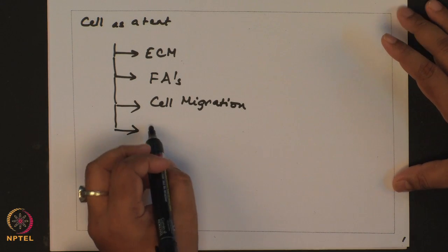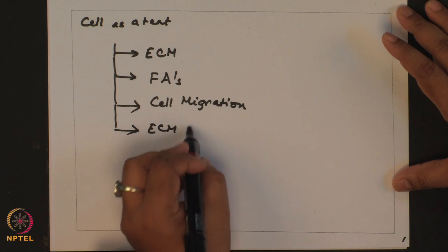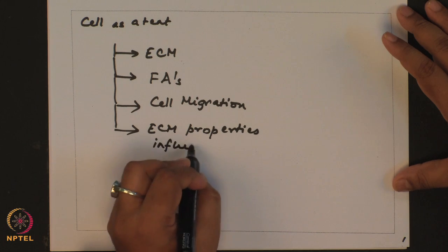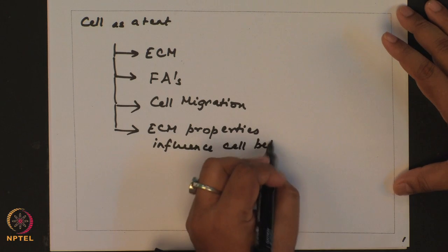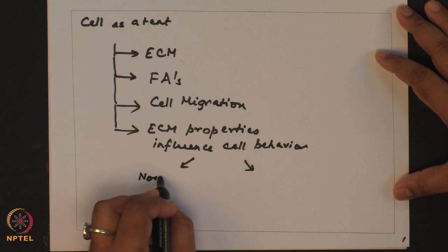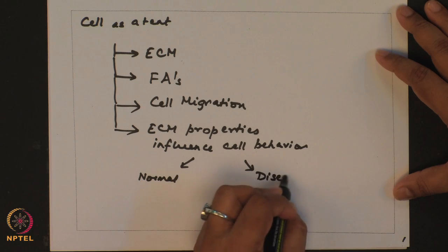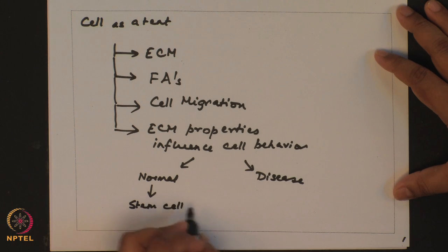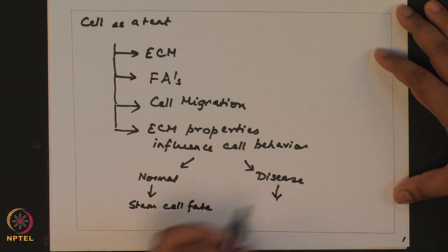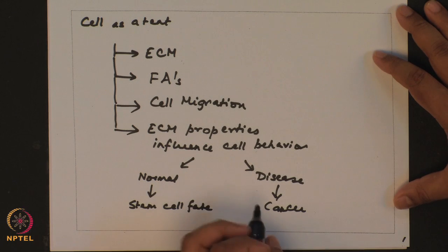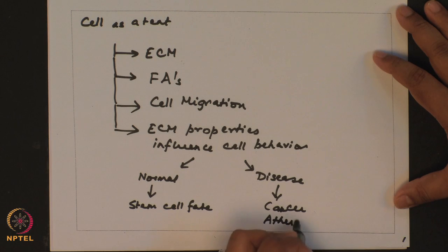After that we started discussing about how ECM properties influence cell behavior, both in the context of normal cell behavior and in case of disease. In normal we discussed about regulation of stem cell fate by ECM stiffness and via modulation of cell shape. In disease we discussed about few cases related to cancer, atherosclerosis and muscular dystrophy.